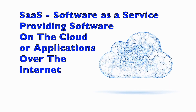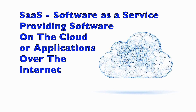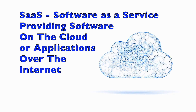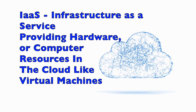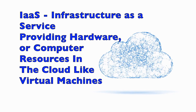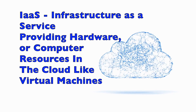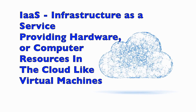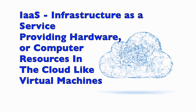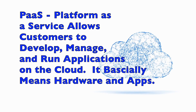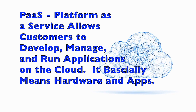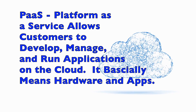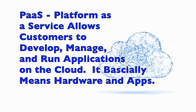A couple other things. You may have seen SaaS — Software as a Service — which basically provides software or applications over the internet. There's another one called IaaS, Infrastructure as a Service, where you provide hardware or computer resources in the cloud, like virtual machines or VMs — something like Amazon or Azure. And finally, PaaS, Platform as a Service, allows customers to develop, manage, and run applications on the cloud. It basically marries the hardware and the apps together, and they call that a platform or PaaS.